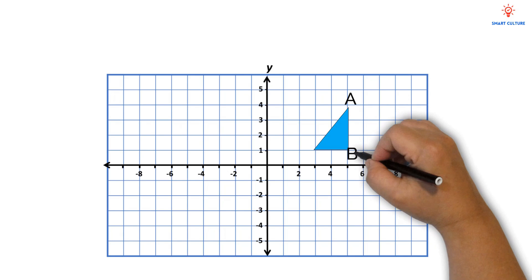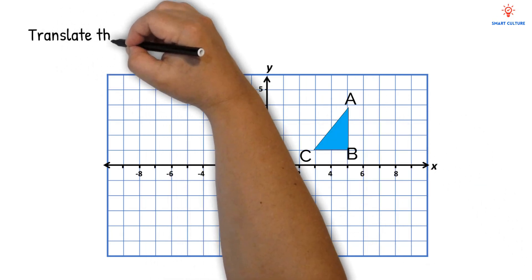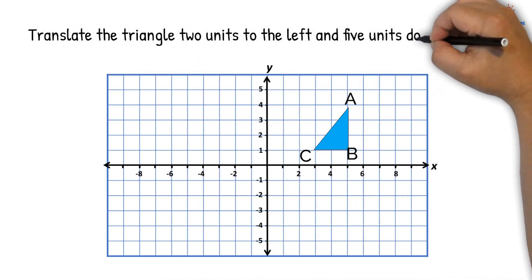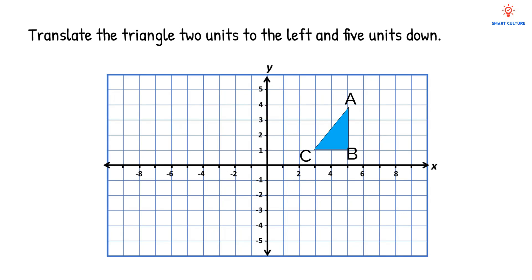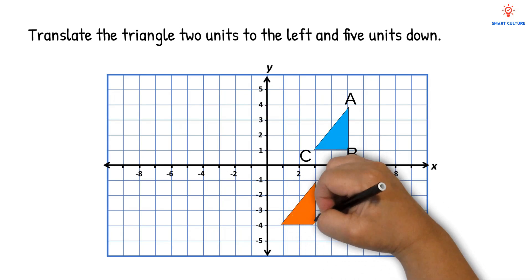Here we have a triangle. And we need to translate this triangle two units to the left and five units down. Where would it be? It would go over here.